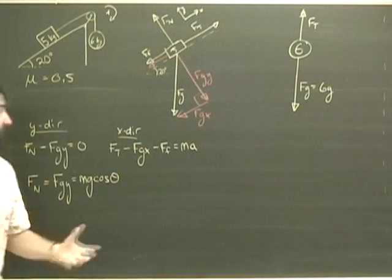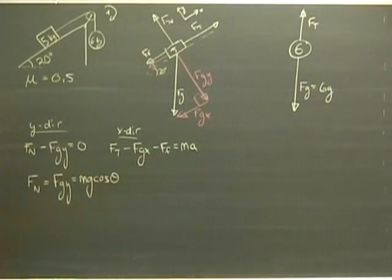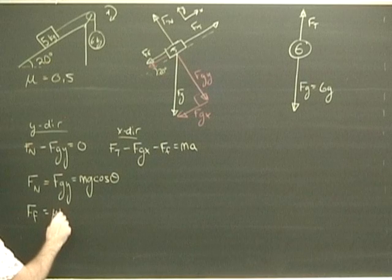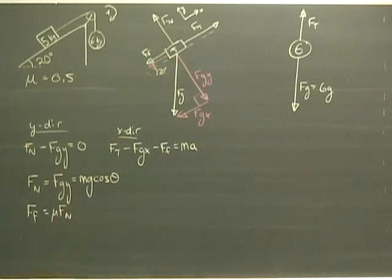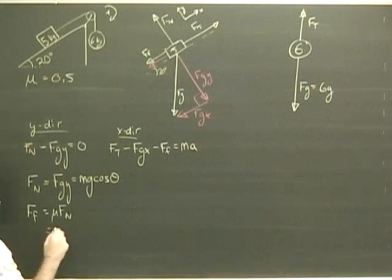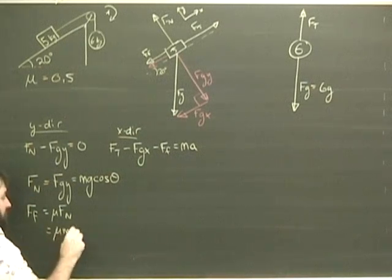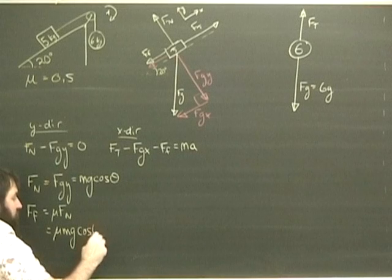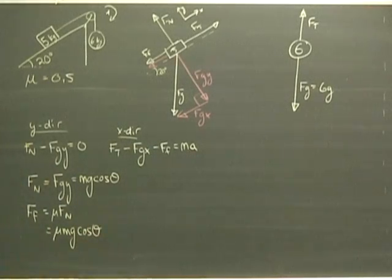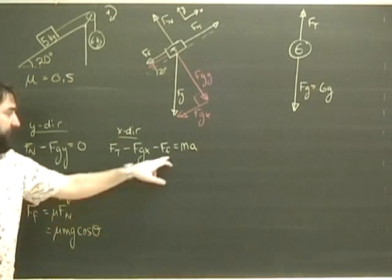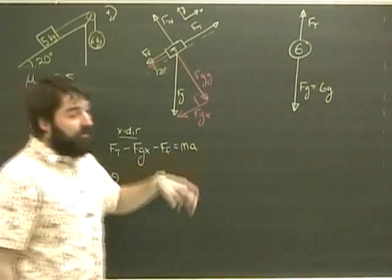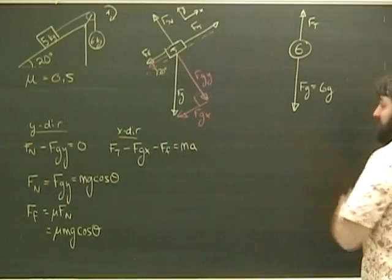Of course we need to find the friction. That's why we're doing all this. The force of friction is equal to mu Fn. Fn is mg cos theta, and that's going to be our expression. Therefore, the force of friction is mu mg cos theta. Well, that's okay. So now we've got force of friction, but we still don't have Ft or A, so we've got to go back and look at this guy.